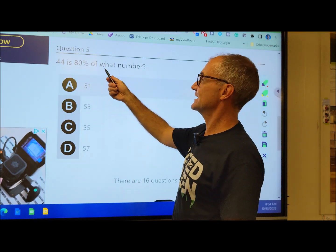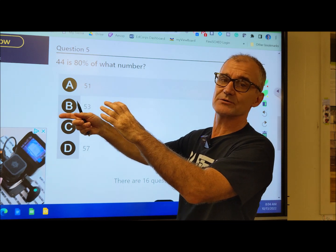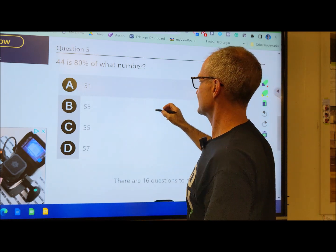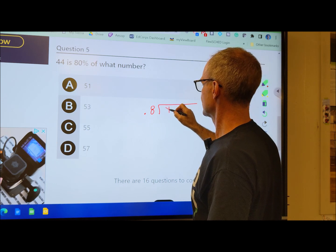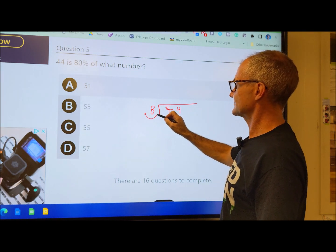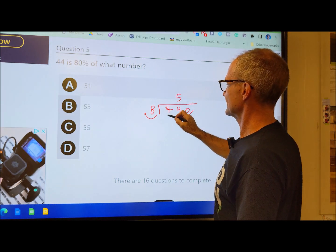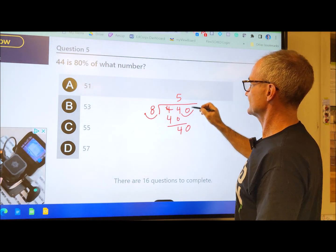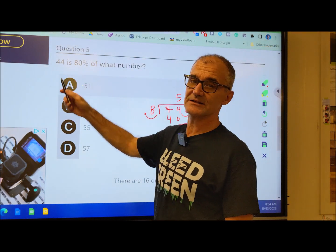Problem number 5. 44 is 80% of what number? So I have a number, I take 80% of that number, and I end with 44. So what I need to do here is I need to take that 44 and divide it by 0.8. So 0.8 goes into 44. Divide here, I move the decimal over 1, I move it over here 1. 8 goes into 44 five times to give me 40. 4 minus 0, bring down the 0. 8 goes into 40 five times. So the answer is 55. 55 times that 80% gives me 44.